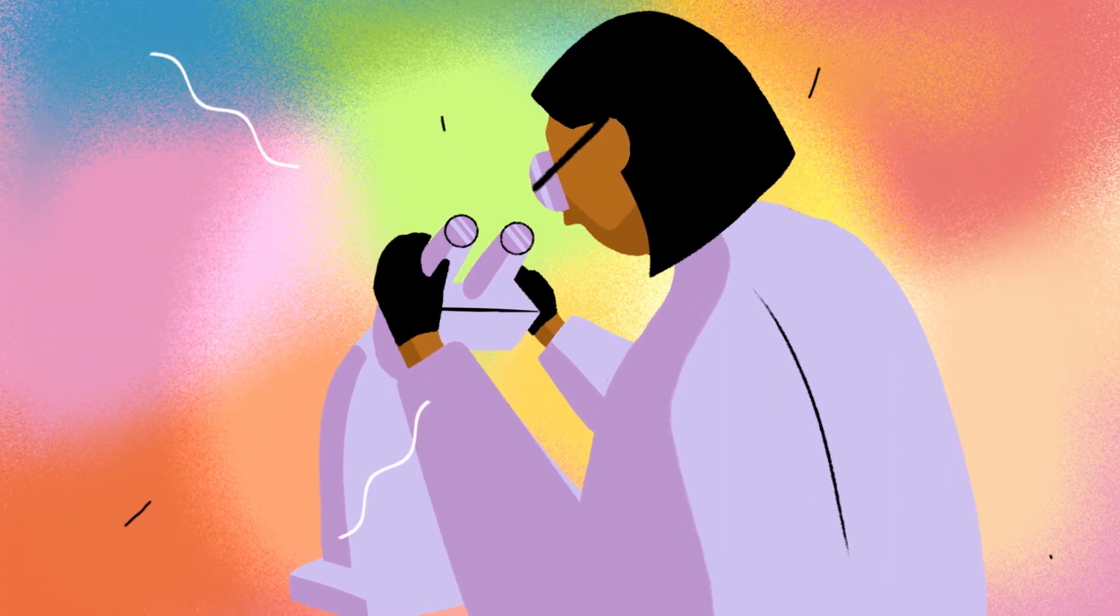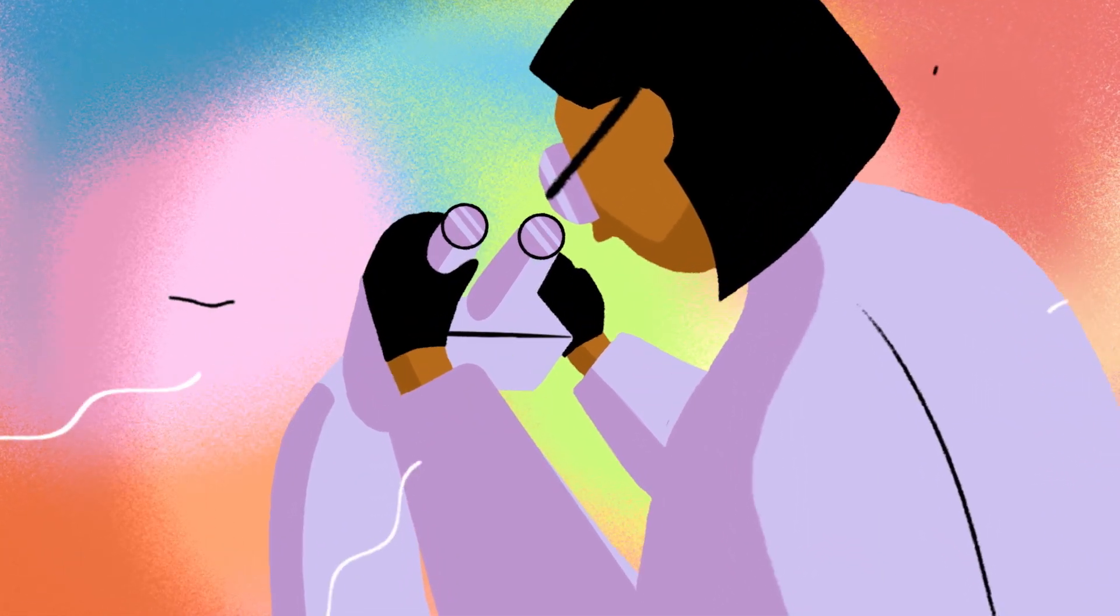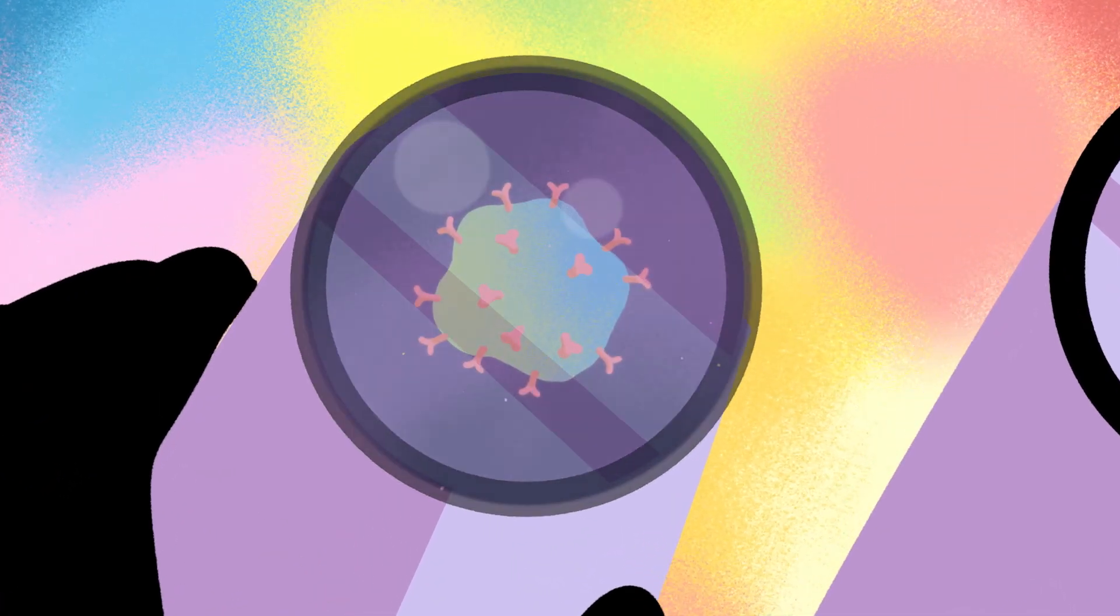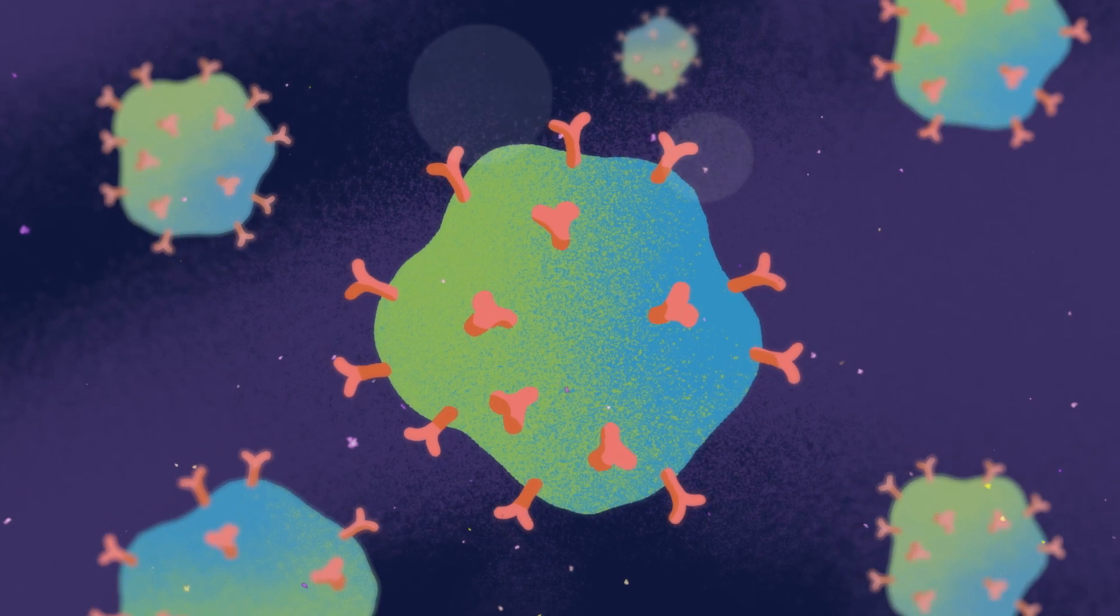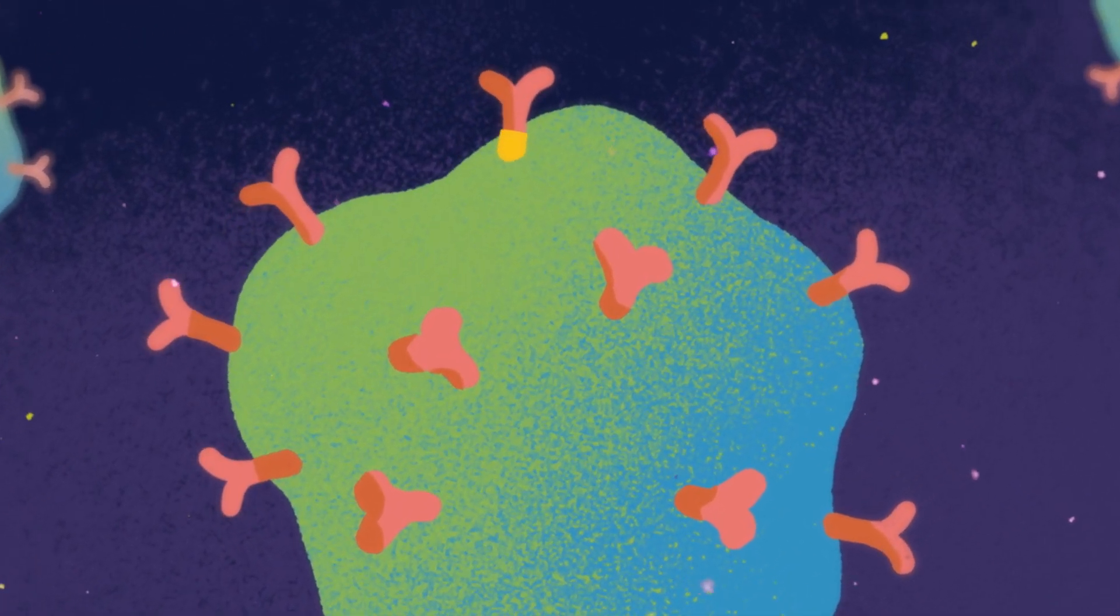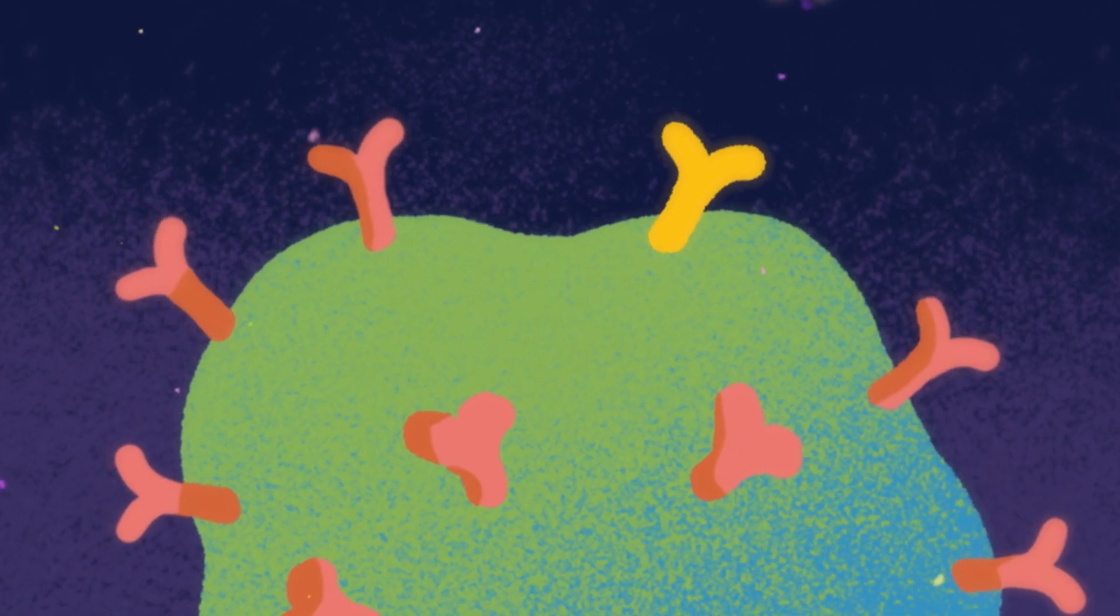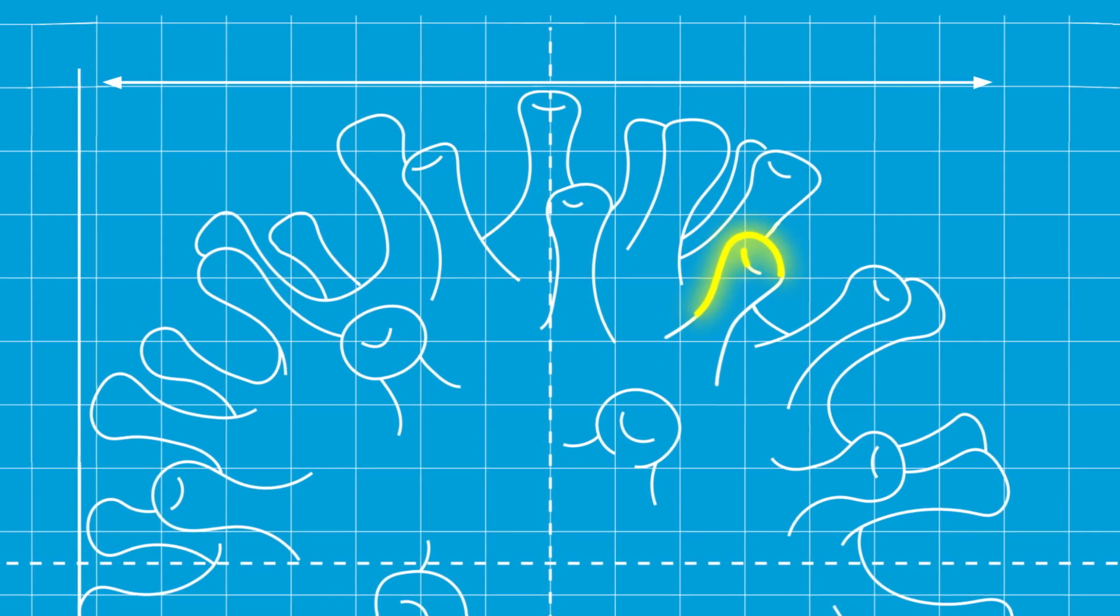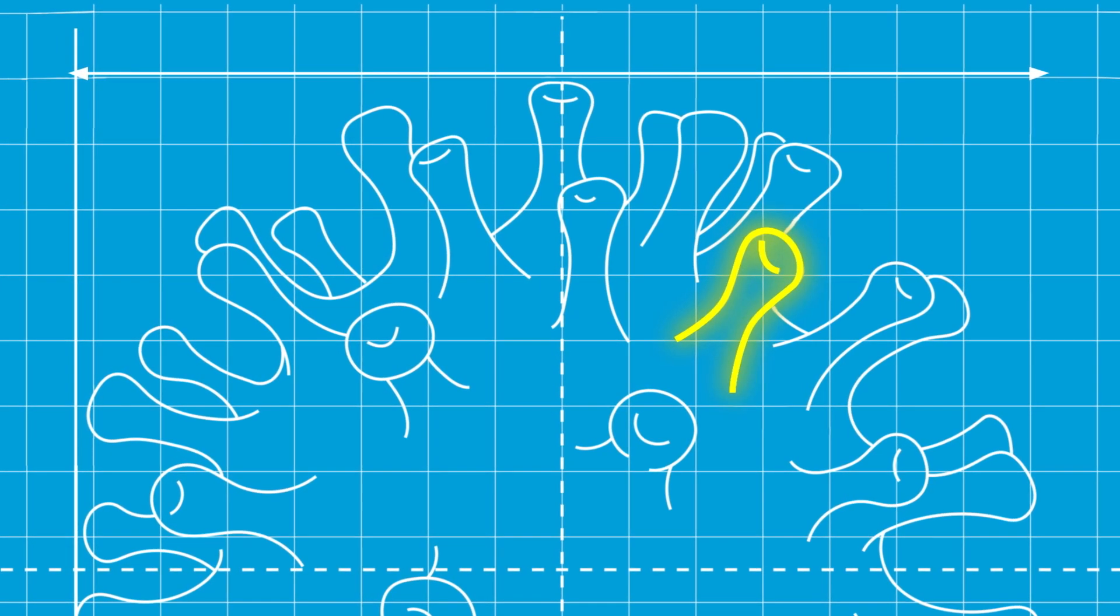Scientists involved in developing the COVID-19 vaccines have revealed fascinating details about how the virus works and spreads. One of these details involves the sticky spiky part on the outside of the virus called a spike protein. This protein gives us a way to defeat the coronavirus.